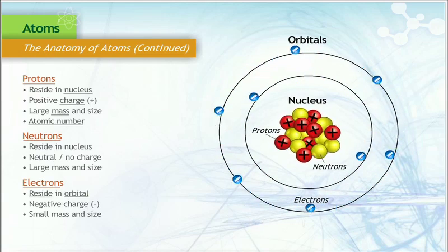Because protons and electrons have opposite charges, they attract each other. This attraction keeps electrons moving around the nucleus.